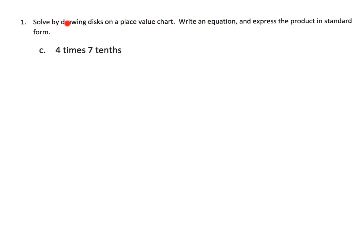So here it says, solve by drawing disks on a place value chart. So we're going to begin by, since it says tenths, we're going to make a very small place value chart. We don't need to go huge. Here it is. And here is our tenths. And here are our ones. And it says we're going to have four copies, or four times, seven tenths. So what does that mean?